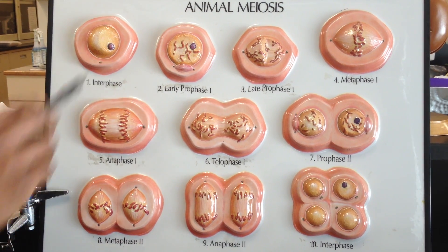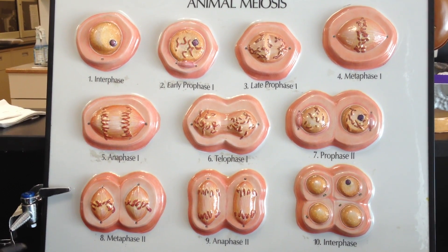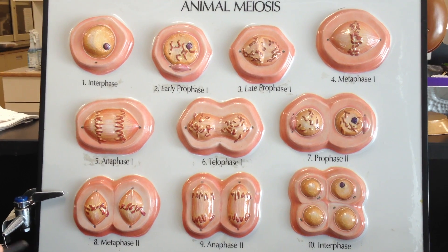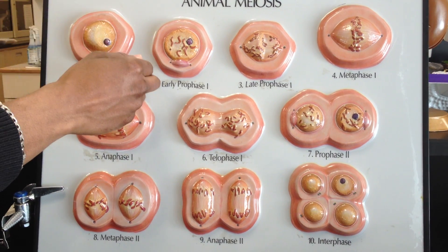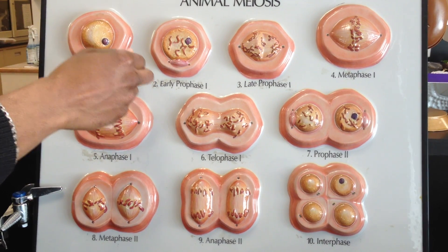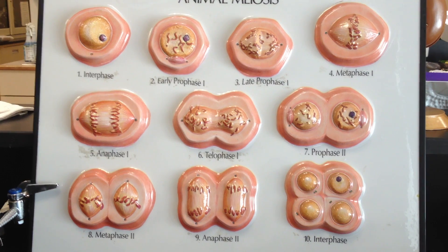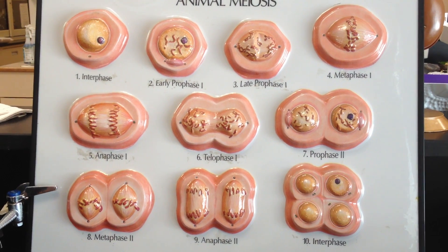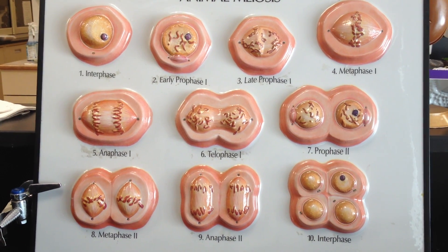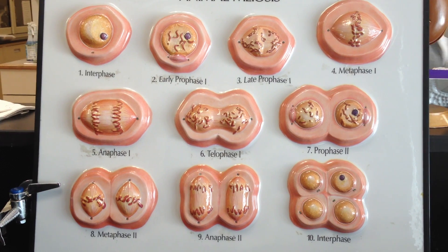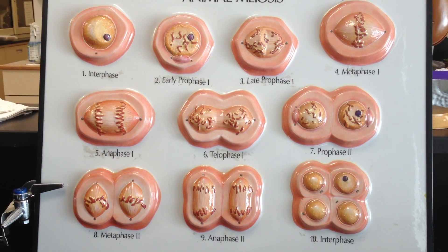So if you get 'where,' seminiferous tubule. For the timing, the cutoff is here. For number one, which is the spermatogonium stem cell, that is from birth for the lifetime of the male.